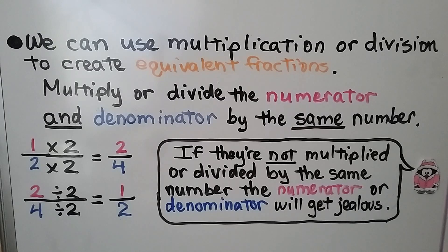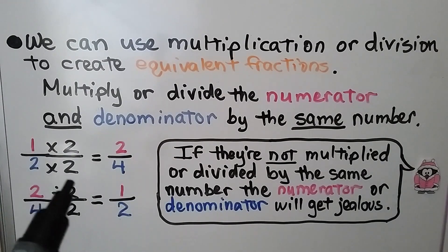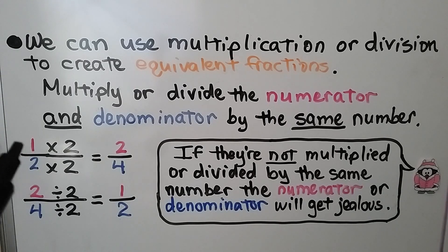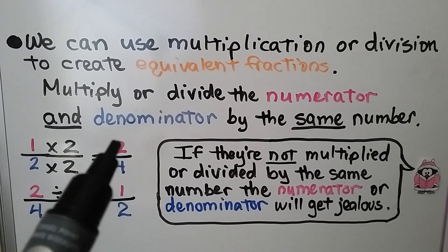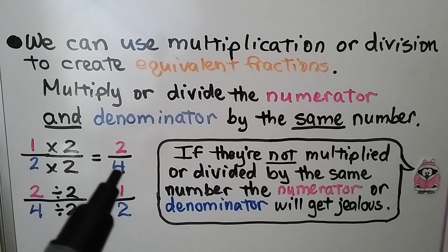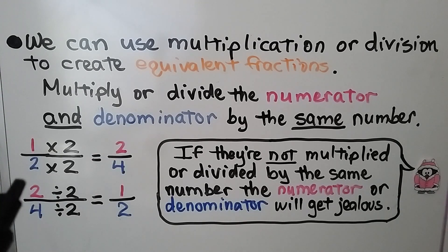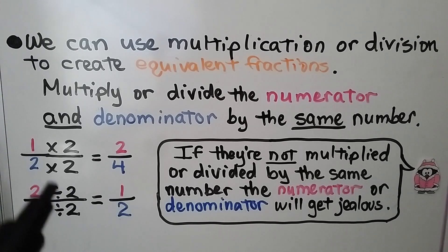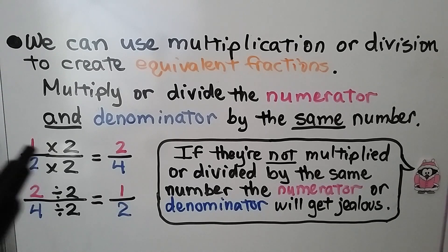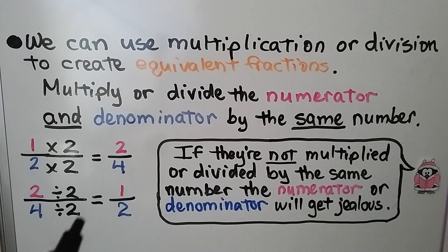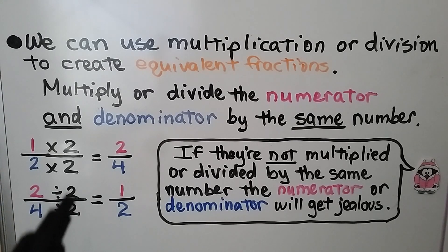We can use multiplication or division to create equivalent fractions. We multiply or divide the numerator and denominator by the same number. We have one-half. If we multiply the numerator times two and the denominator times two — the same number — we get one times two is two for our new numerator, and two times two is equal to four. We have two-fourths. We can also take two-fourths and divide both the numerator and denominator by the same number. Two divided by two is one, and four divided by two is two — we go back to one-half. If they're not multiplied or divided by the same number, the numerator and denominator will get unequal. So these have to be the exact same number for both the numerator and denominator.